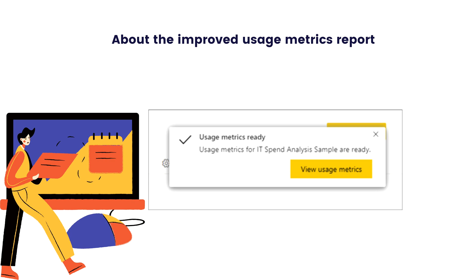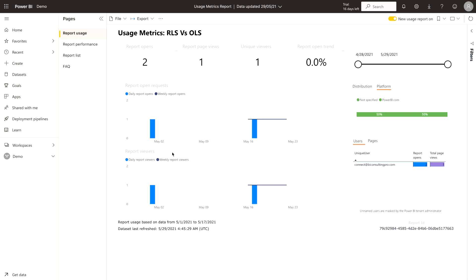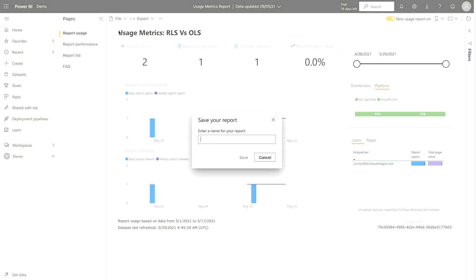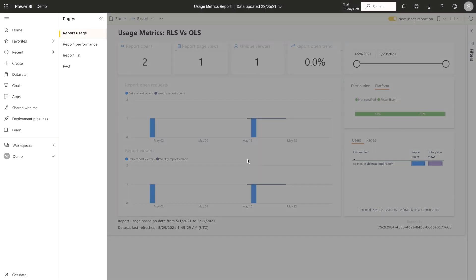When you display the improved usage metrics report, Power BI generates a pre-built report. It contains usage metrics for that content for the last 30 days. The report looks similar to the Power BI report you are already familiar with. You can slice based on how your end users received access — whether they access via the web or mobile app. It updates every day with new data. I'm generating my new report here, and as you can see it has been generated.